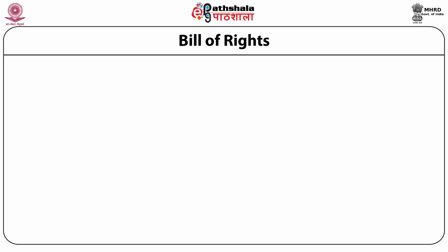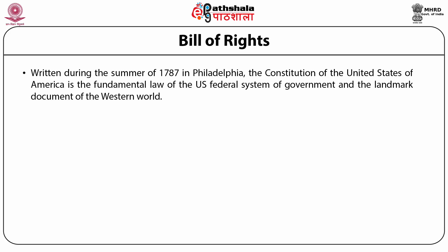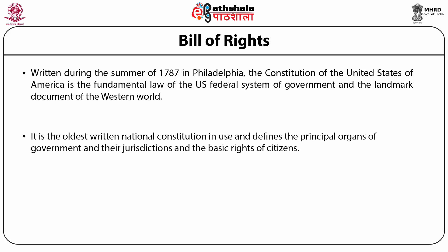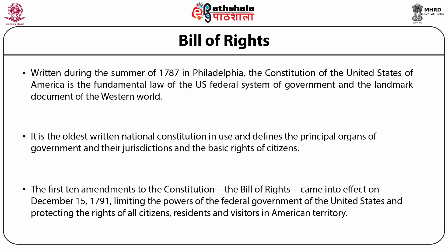Now let's come to the Bill of Rights. Written during the summer of 1787 in Philadelphia, the Constitution of the United States of America is the fundamental law of the US federal system of government and is the oldest written national constitution in use, making the United States the oldest democracy as well. The first ten amendments to the Constitution — the first ten changes — are collectively known as the Bill of Rights and came into effect on December 15, 1791, limiting the powers of the federal government and protecting the rights of all citizens, residents and visitors on American territory.